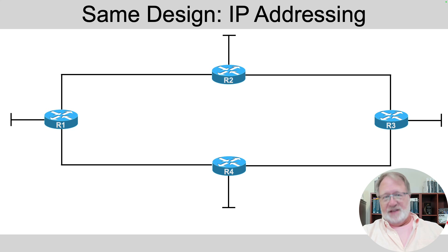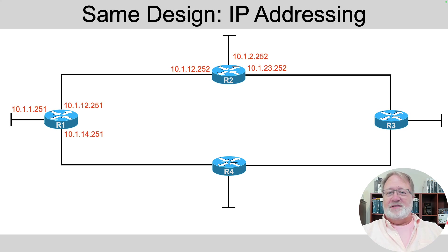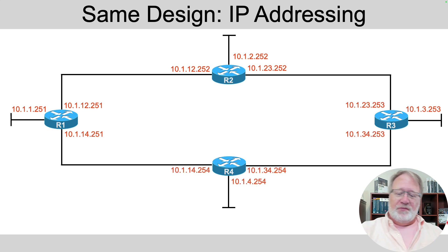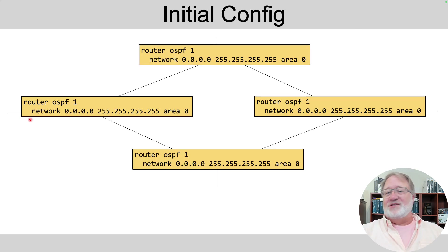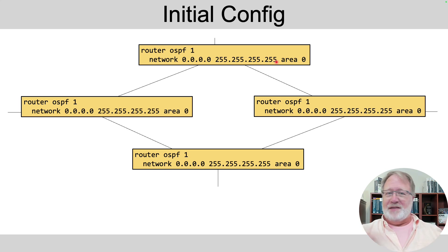Let me tell you about the network we'll use in the examples in this video. We've got four routers, each connected with a WAN link to two others, and each has a LAN interface. I'll show you the IP addresses on the interfaces because that matters to the configuration. I'm going to focus on R1 in the examples. I start with some assumed configuration: an OSPF process and the same network command on all four routers — an all-zeros address and an all-255s wildcard — meaning OSPF is enabled on all interfaces in area zero.